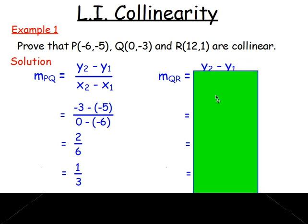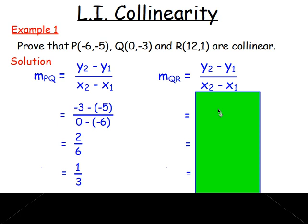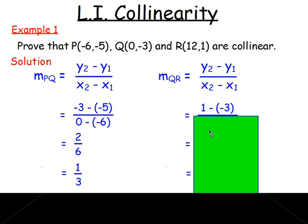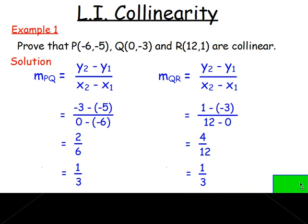Let's see what we have. So the gradient again is Y2 take Y1 over X2 take X1. Subbing in the values, so we've got one take away negative three and then 12 take away zero. Simplify that. So that's one add three, which becomes four. 12 take away zero is still 12. We get four twelfths. Again, simplify it if you can. You wouldn't leave it as two sixths and then the four twelfths. Simplify it because if you do that, you will also get one third.